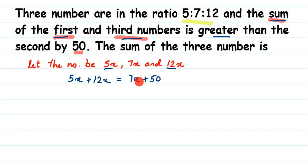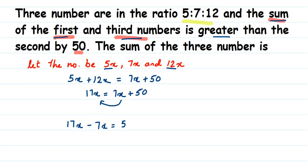Now we have to find the value of x. So 5x plus 12x is 17x, giving us 17x equals 7x plus 50. We transpose 7x to the other side — the sign changes from positive to negative — so 17x minus 7x equals 50. Subtracting gives 10x equals 50. We don't want the coefficient 10, so we divide both sides: 10 is in multiplication, so when transposed it becomes division.